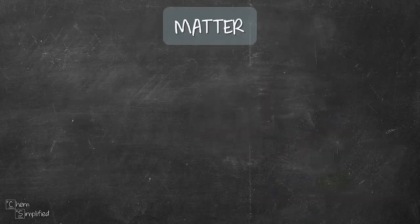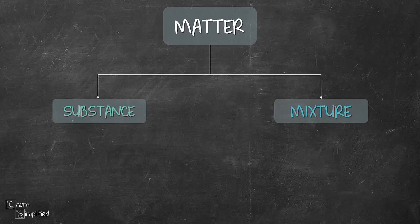Matter can be split into two groups: substance and mixture. Substance is a pure matter, it has definite or fixed composition. That means you know exactly what it is made out of. You'll be able to provide the chemical formula for it.